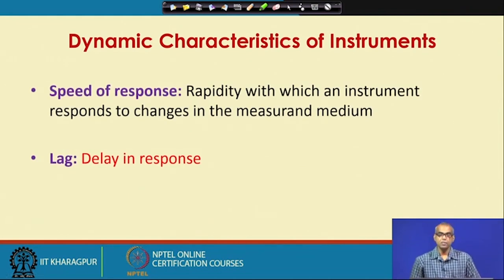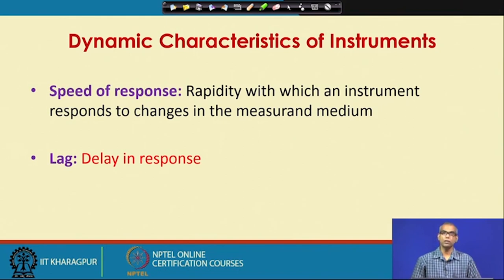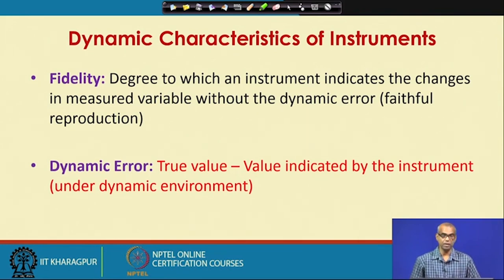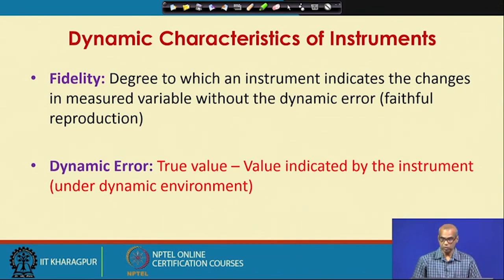Speed of response is defined as the rapidity with which an instrument responds to changes in the measured medium. Lag is the opposite — it is a delay in response. Fidelity is the degree to which an instrument indicates changes in the measured variable without dynamic error, meaning it is a measure of faithful reproduction. Dynamic error is defined as the difference between the true value and the value indicated by the instrument under dynamic conditions.